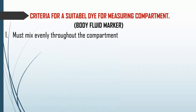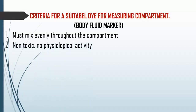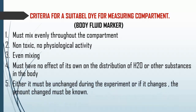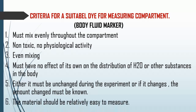There is always a criteria for a suitable dye or tracer. First, the dye must mix evenly throughout the compartment being measured. Second, it should be non-toxic with no physiological activity, since it is injected into a person. Third, it must have no effects on the distribution of water or other substances in the body. Either the dye must be unchanged when injected, or if it changes, the amount changed must be known. Finally, the indicator should be relatively easy to measure and trace.